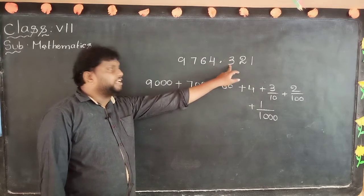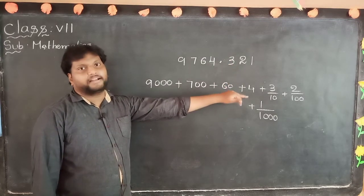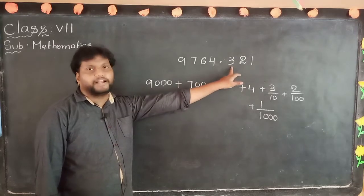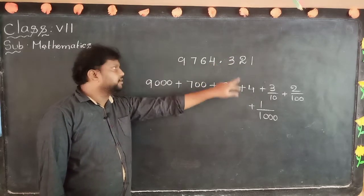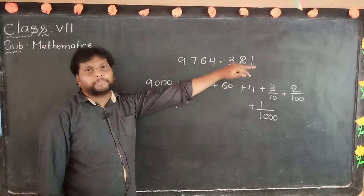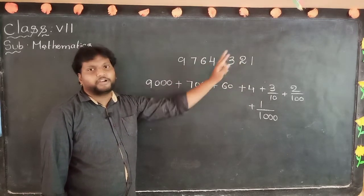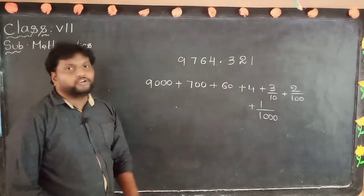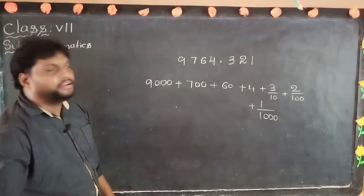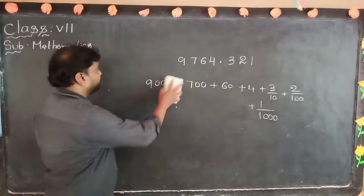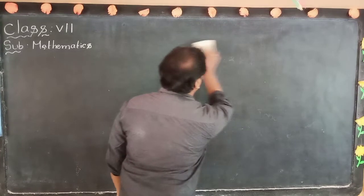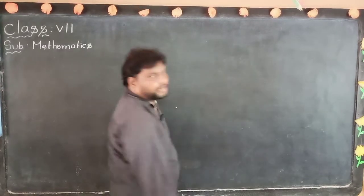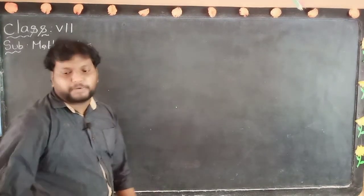3 into 1 by 10 is nothing but 3 by 10. 2 into 1 by 100 is nothing but 2 by 100. Like this we have to expand in decimals. Next: comparison of decimals.